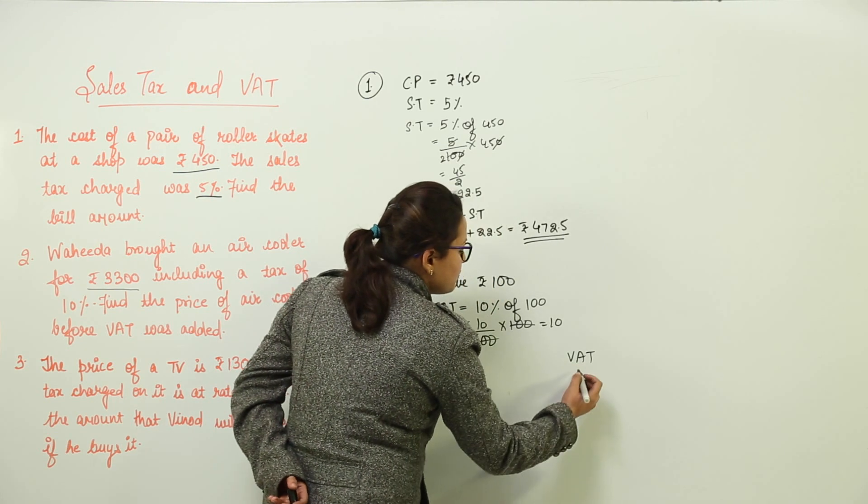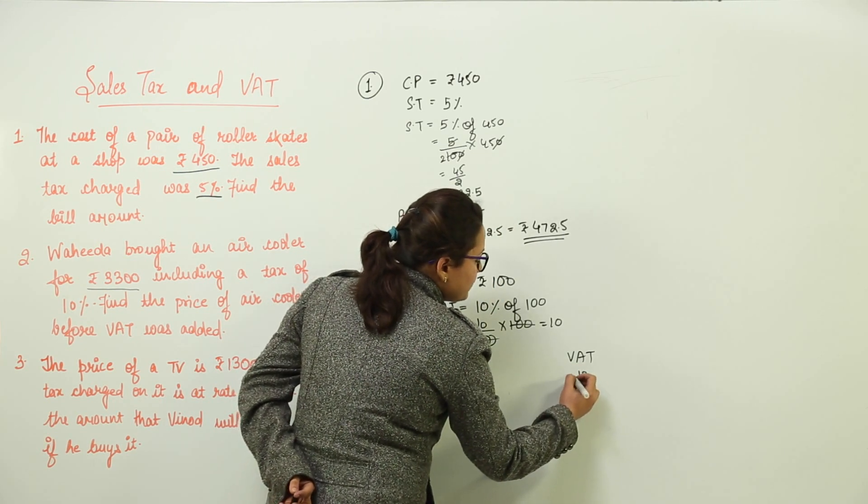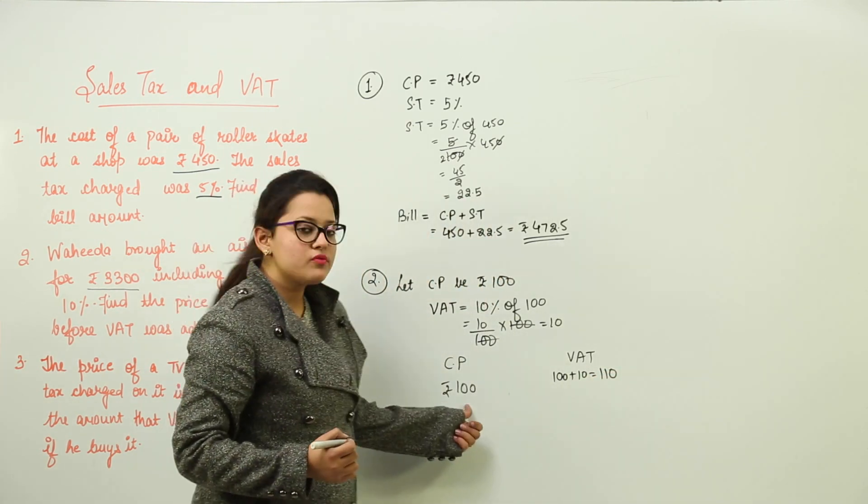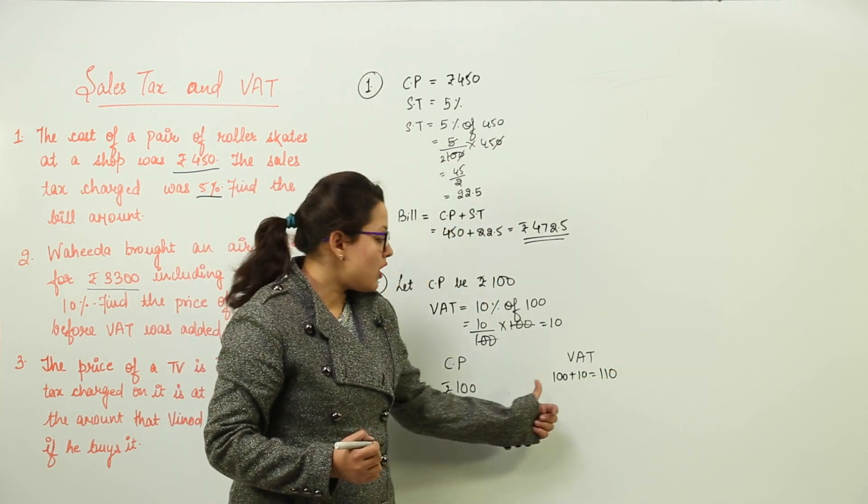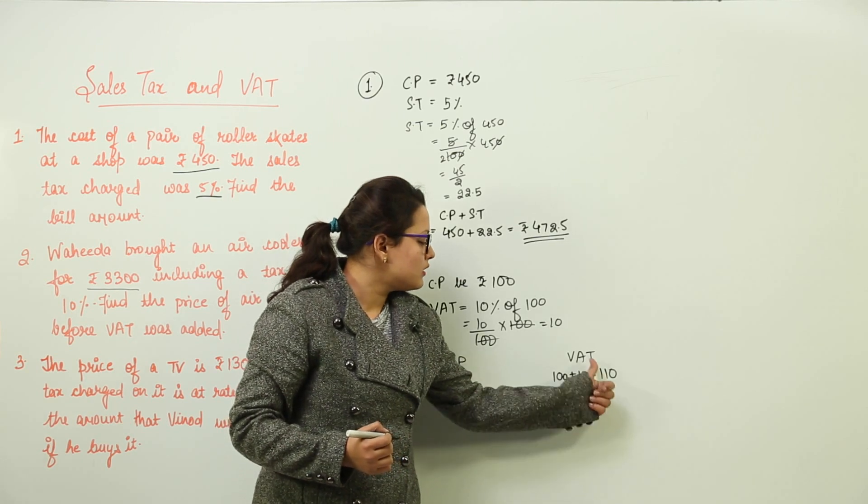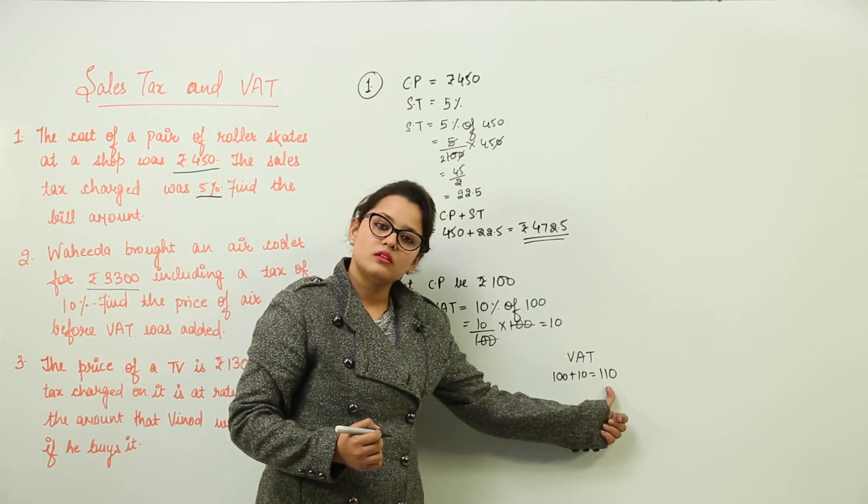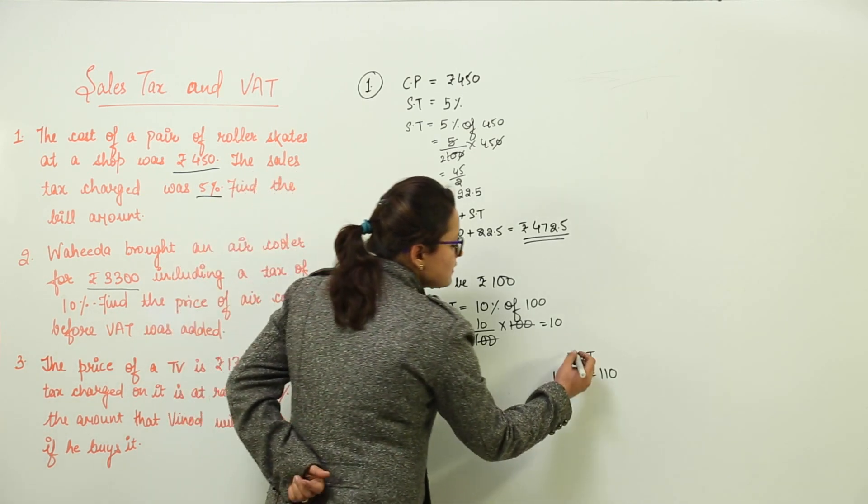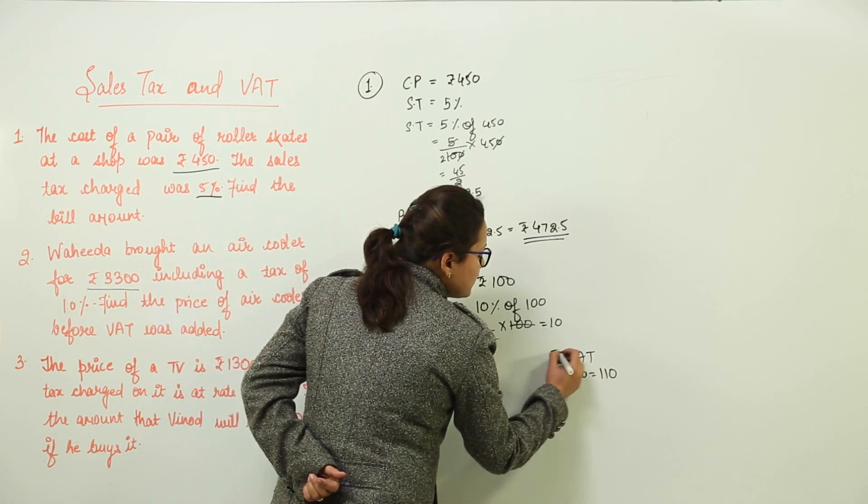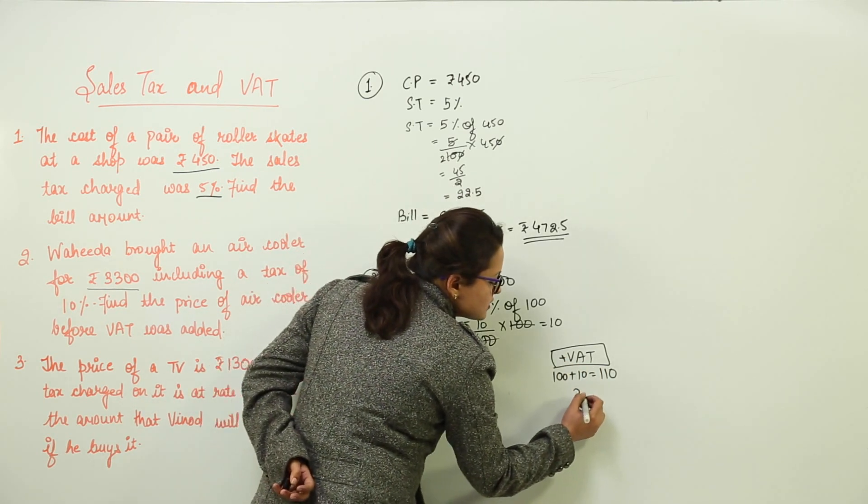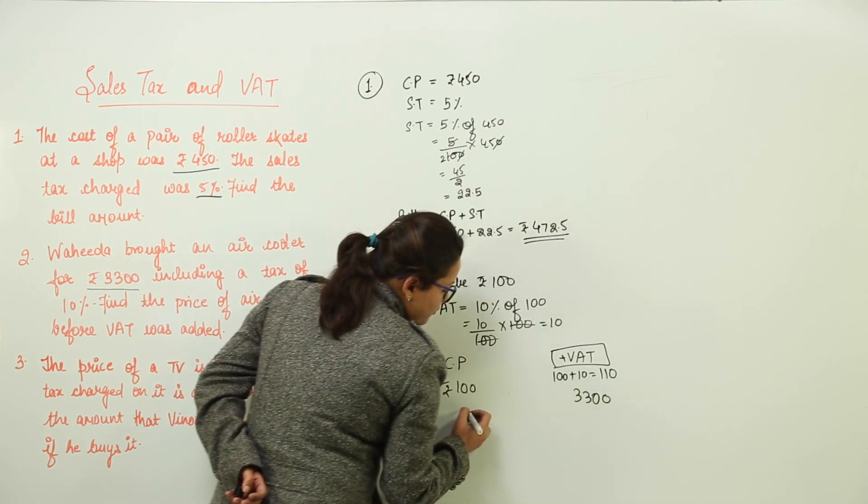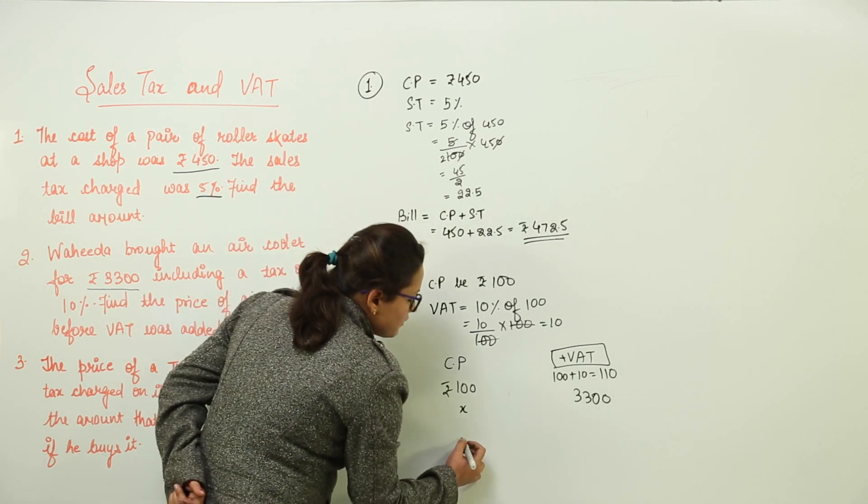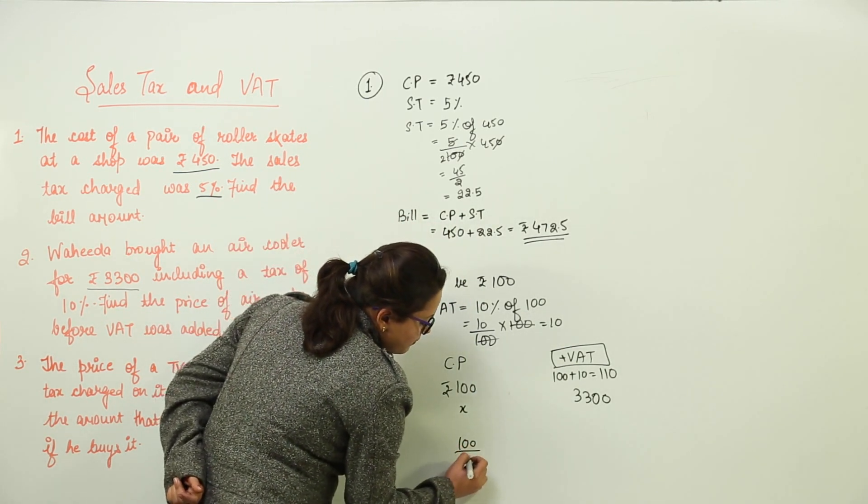So that makes it like: if we have the cost price ₹100, the VAT on that would be ₹10 plus your 100, that makes it 110. Now if the cost price of any product is ₹100, you have to pay the total amount including VAT is 110. Now the question says this amount including VAT is already given to us, which is 3,300. We have to find this out.